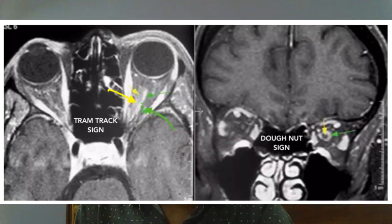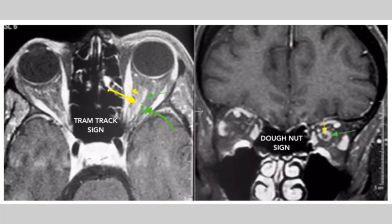The third differential — a compressive optic neuropathy — is the probable diagnosis. So I order a neuroimaging: an MRI brain with contrast. Just look at this MRI picture of our patient. I have written two important signs: a tram track sign and a donut sign.